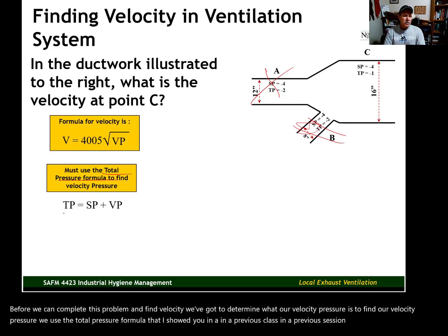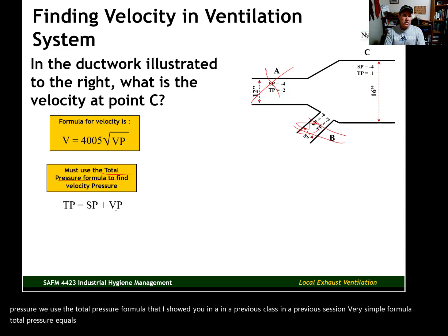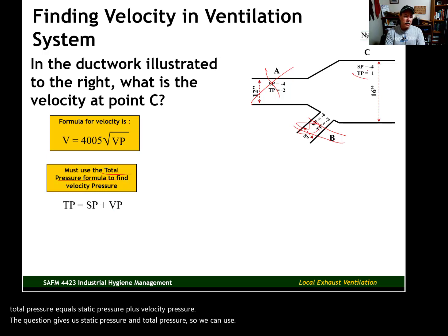Very simple formula. Total pressure equals static pressure plus velocity pressure. The question gives us static pressure and total pressure, so we can use these values to calculate velocity pressure.